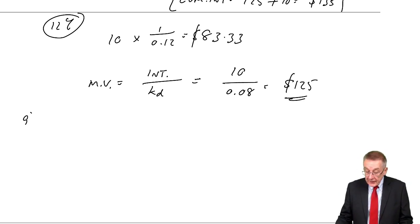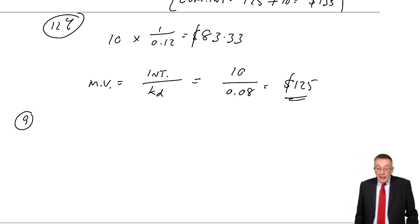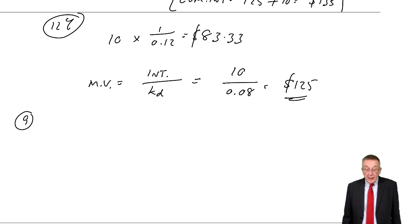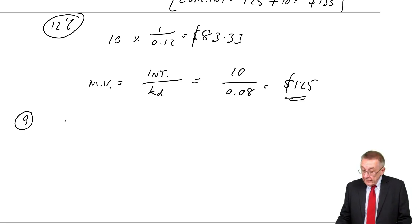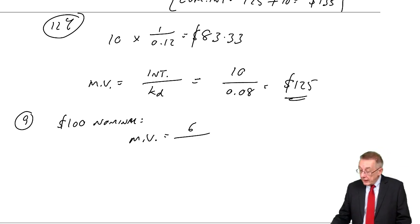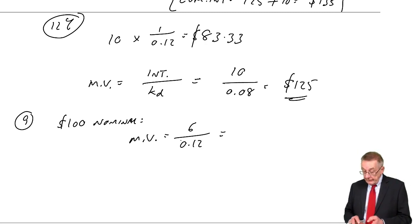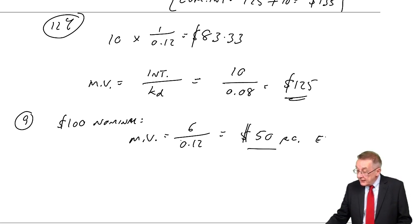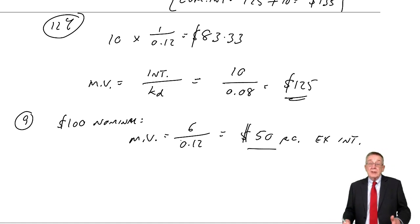Now example nine. They've got an issue of 100, 6% debentures, required return 12%. For $100 nominal, the market value is the coupon rate — interest of $6 a year — over the required return KD of 12%, giving a market value of $50. That's $50 for every $100 nominal, ex-interest. That's irredeemable covered.